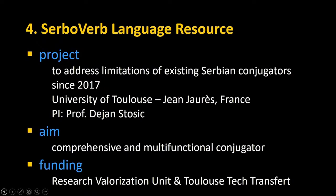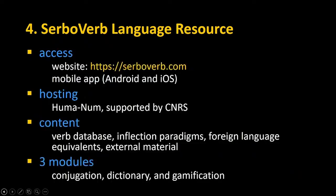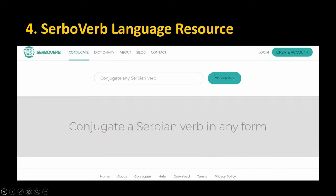The project was built in 2017 at the University of Toulouse. The project coordinator is Professor Dejan Stošić from that university. The aim of our project was to build a comprehensive and multilingual conjugator for the Serbian language. Our team includes linguists, lexicographers, and NLP researchers — it is a completely bilateral collaboration between Toulouse and Belgrade. The app can be searched for free in open access without creating any account, and there is also a mobile app available on Android and iOS.